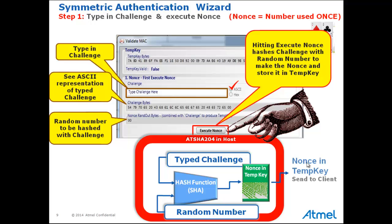Don't be confused by the concept of the TempKey register — just think of it as where the result of the hash of the challenge with the random number goes. That result is called a NONCE, which simply means number used once. The purpose of hashing the challenge with the random number is to create a unique number used only once, so that an attacker cannot figure out what the original challenge was. This is called creating higher entropy, and it increases security substantially.